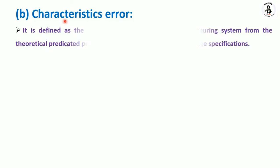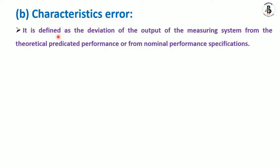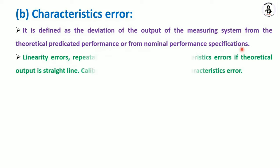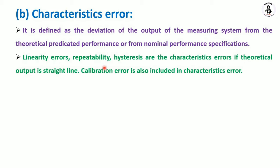The second type of static error is characteristics error, defined as the deviation of the output of the measuring system from its theoretically predicted or nominal performance specifications. This includes linearity errors, repeatability, and hysteresis. If the theoretical output is a straight line, calibration error is also included. Regular calibration of measuring instruments helps minimize this type of error.